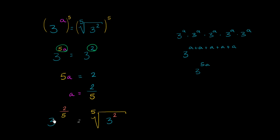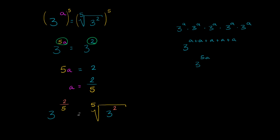Take this 3, raise it to the second power, and then find the fifth root of it. Or, using the property we just saw, you could rewrite this as 3 squared and then raise that to the 1 fifth power. You could just multiply these two exponents to get 3 to the 2 fifths power — and that's the same thing as taking 3 squared and then finding the fifth root of it.